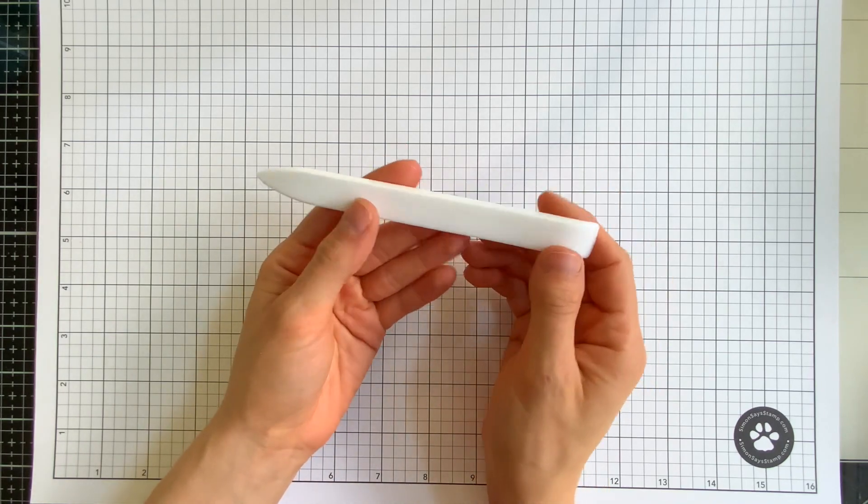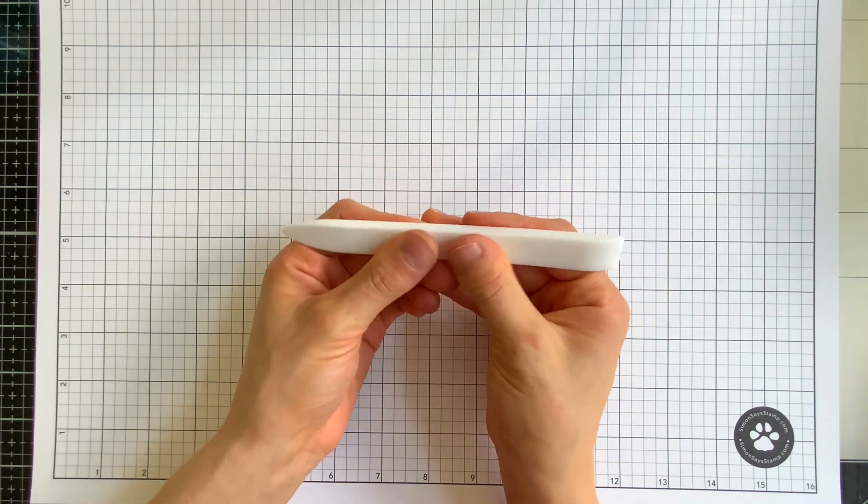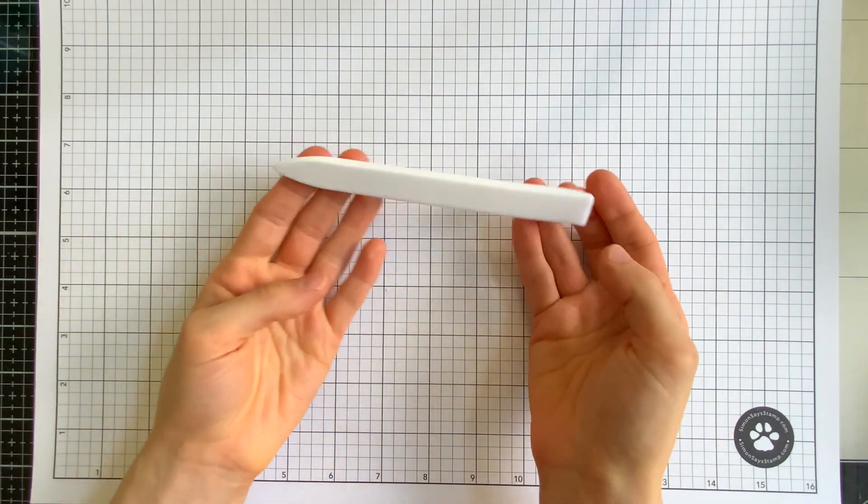Speaking of making card bases that brings us to the next item on our 10 essentials for card makers list, the bone folder. Our Simon exclusive bone folder is made from Teflon which means that adhesives, inks, and paints will not stick to it.